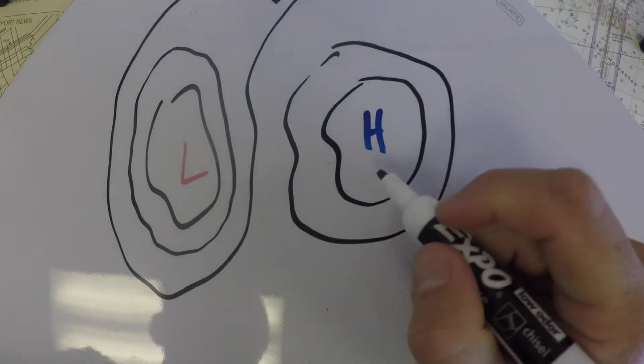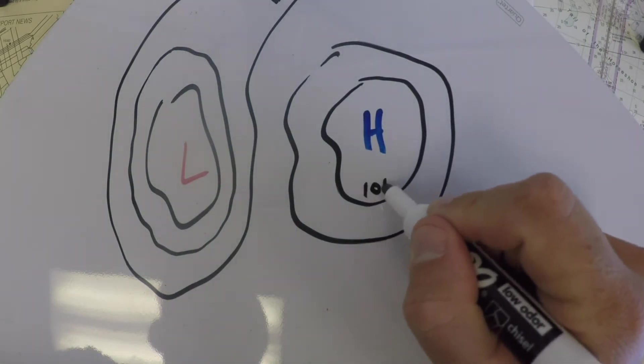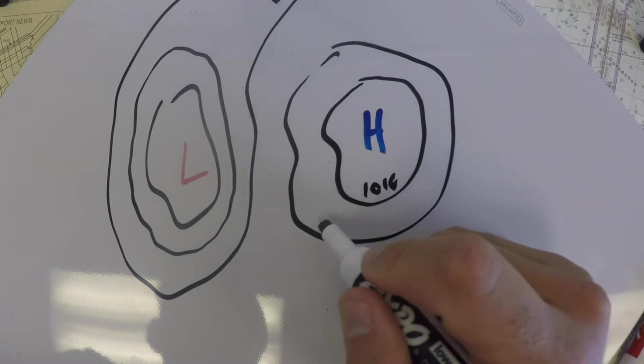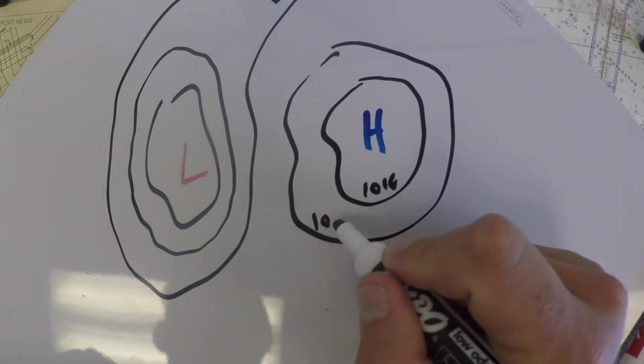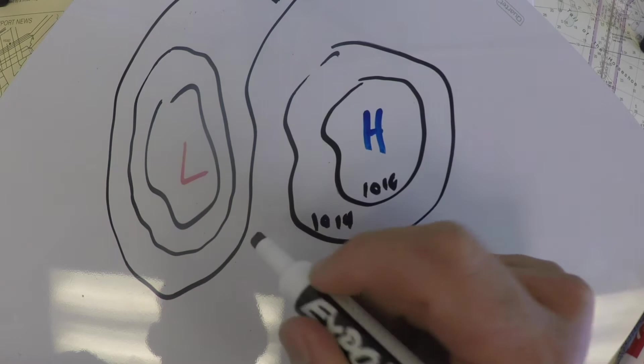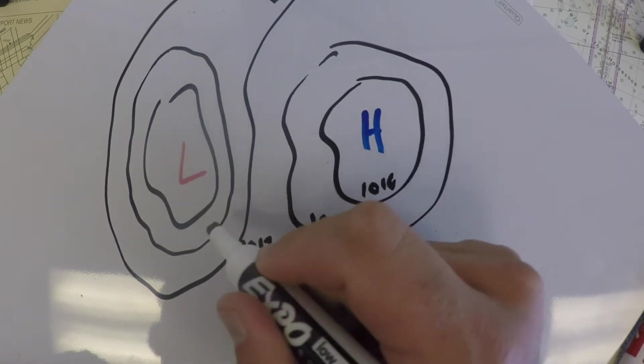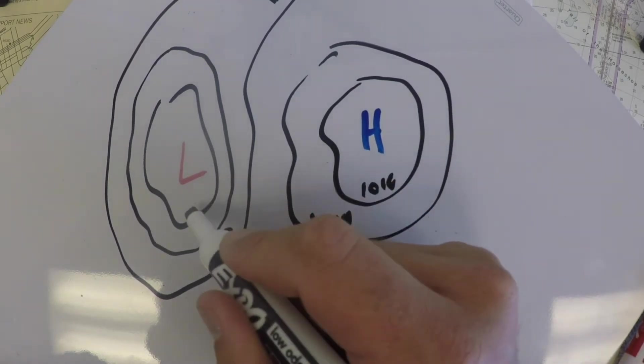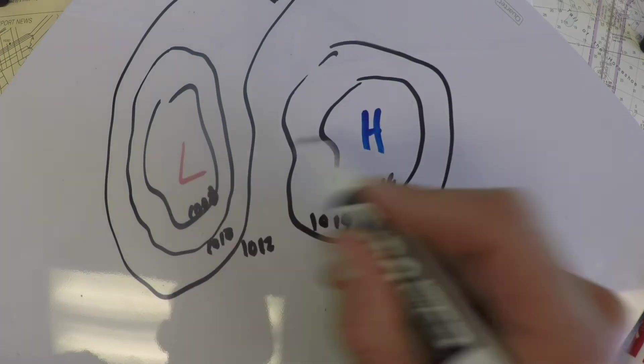And what these refer to is the general pressure of the atmosphere. So everywhere along each line, the atmospheric pressure is the same. So you might see numbers like 1016, and then that's the highest pressure around, and it's going to diminish to 1014, 1012, 1010, and then 1008 for the lowest pressure around.